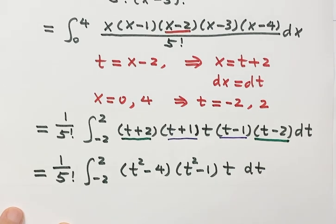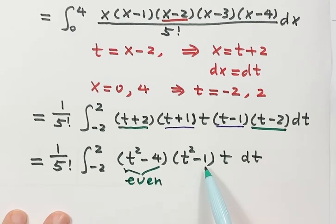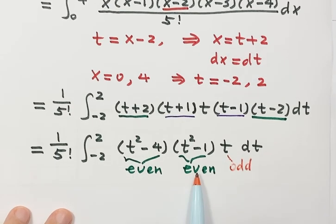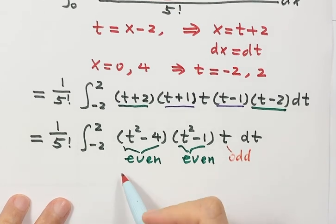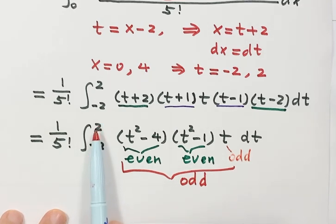Now let's see here. This one, t squared minus 4, that's an even function. t squared minus 1 is also an even function. So the overall is an odd function. Now let's look at the interval from negative 2 to 2. This interval is symmetric about 0. So then the integral of an odd function over the interval is 0.